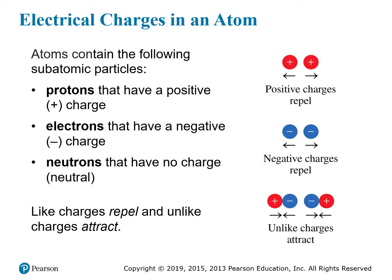Within an atom, there are a few subatomic particles. Protons have a positive charge, electrons have a negative charge, and neutrons have no charge — they are neutral. From basic physics, we know that positive charges repel one another, and two negative charges also repel each other. But if you bring a positive charge near a negative charge, those opposites attract one another. So opposites attract is the rule for charged particles.